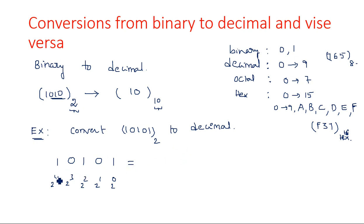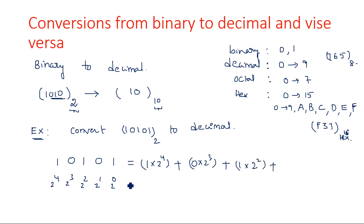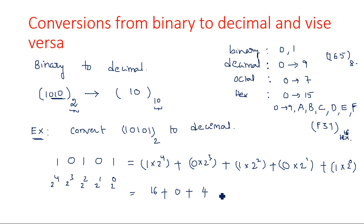So: 1 × 2⁴ + 0 × 2³ + 1 × 2² + 0 × 2¹ + 1 × 2⁰. That equals 16 + 0 + 4 + 0 + 1 = 21. So the corresponding equivalent decimal number is 21.